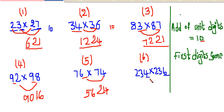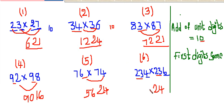Here also we can use the same trick because the first numbers are the same and the addition of the end digits, 4 plus 6, is 10. So we can use the same trick for large numbers also. 6 times 4 is 24, and we can multiply 23 into 23 and put the result here.